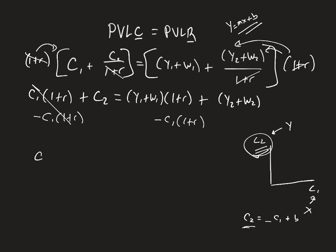That's going to go away, so I'm going to be left with c2 equals, and I'm going to have my y1 plus w1 times 1 plus r, plus y2 plus w2, minus c1 times 1 plus r.